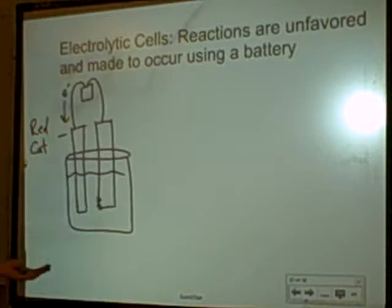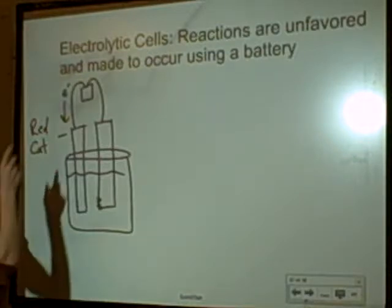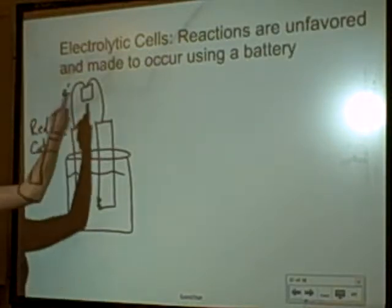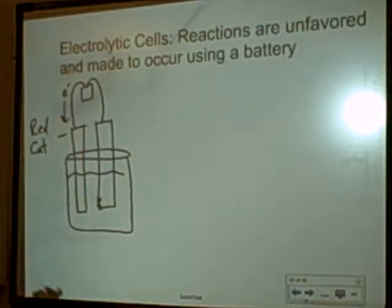So, that's what happens naturally. Galvanic cells is the spontaneous cell. It's the cell that occurs. When you have an electrolytic, the battery forces the negative electrons to the negative electrode.